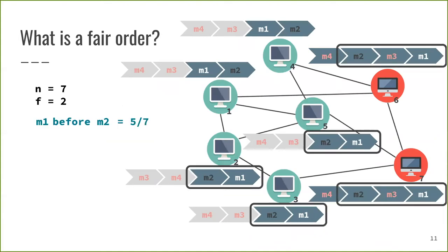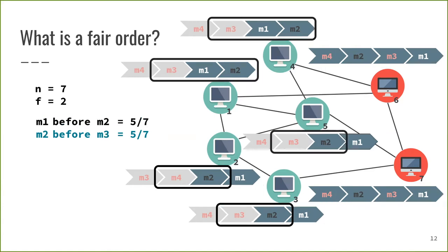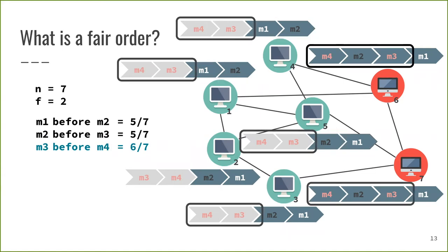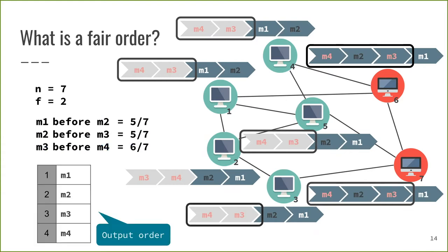To achieve a fair output order among these messages, we count the number of times a message appears before another message in the local input order of all parties. For instance, M1 appears 5 times out of 7 before M2. That means M2 appears only twice before M1. But M2 appears 5 times before M3, and again, M3 appears only twice before M2. M3 appears 6 times before M4 and only once the other way around. By counting all these majorities, we obtain fair output order and the attempt to place M3 before M2 by the malicious parties has been prevented.